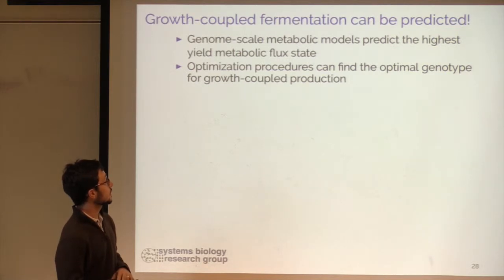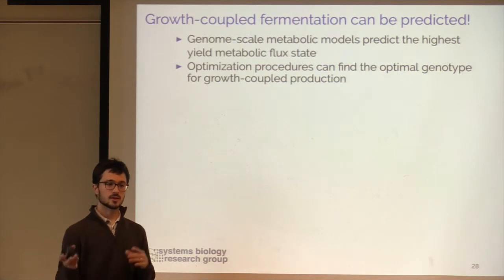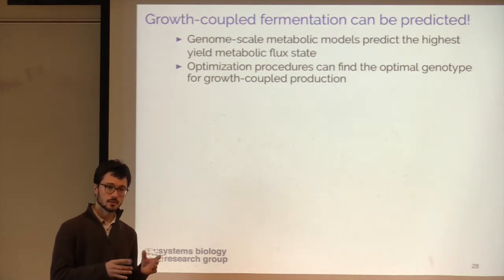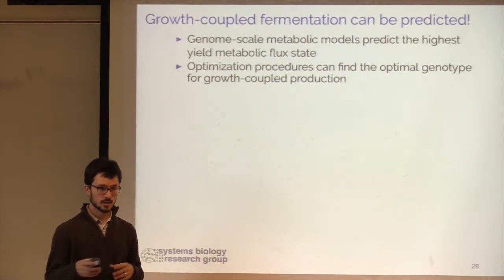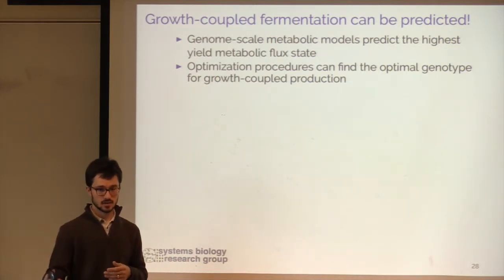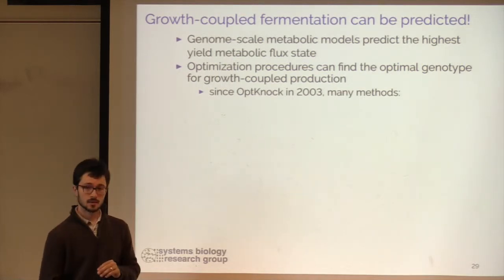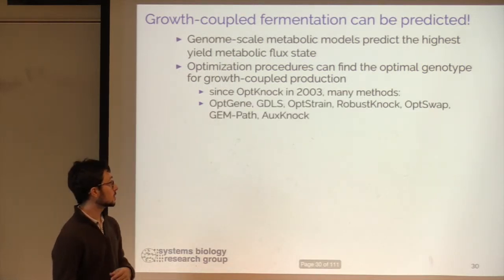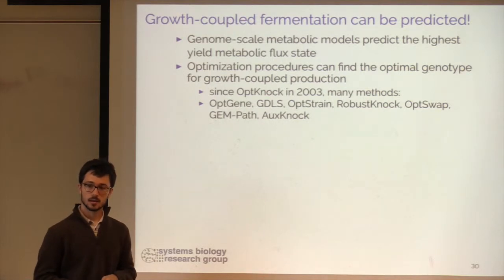Genome-scale models are built to predict the highest yield metabolic flux state based on the stoichiometry of the system — and this is also the evolutionary objective. As a secondary step in silico, we can build optimization procedures to find the genotype, or set of gene knockouts, that would force growth-coupling of a particular target. The first of these algorithms is called OpKnock, which came out in 2003, and it's led to a whole slew of follow-up methods: OpGene, GDLS, OpStrain, RobustKnock, OpSwap, GenPath, OxKnock, and many others.